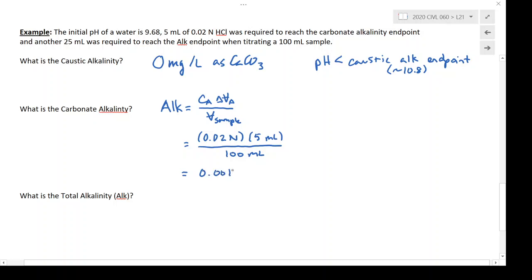0.001 equivalents per liter, and if I multiply that by 50,000 milligrams of CaCO3 per equivalent, I get an answer of 50 milligrams per liter as CaCO3, and that's my answer.